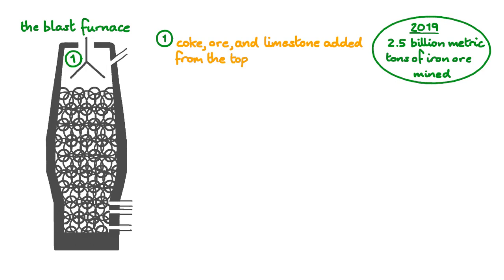In the first step, coke, ore and limestone are added to the furnace from the top. The coke provides the carbon, the ore provides the iron-3 oxide, and the limestone provides the calcium carbonate.